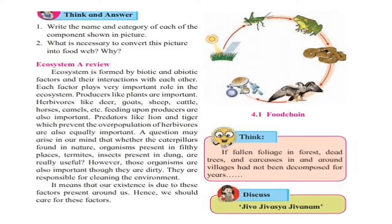Predators like lion and tiger, which prevent the overpopulation of herbivores, are also equally important. Organisms found in filthy places, and insects present in dung, are also really important. Though these organisms are dirty, they are responsible for cleaning the environment. It means that our existence is due to these factors present around us, and hence we should care for all of them.